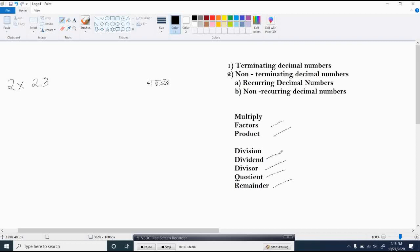The dividend is the number that we divide. The divisor is the number that we use to divide the dividend into equal groups. Quotient is the answer and remainder is the remaining dividend or the remaining number.